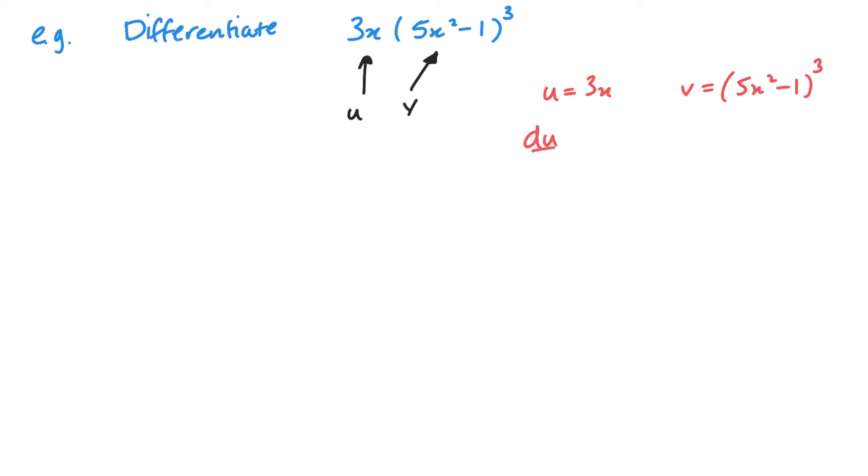And what I need to do now is differentiate both of these. So du by dx. So du by dx will be 3 in this case, and then dv by dx. So if you remember from last time, we multiply by the 3 to the power 2, same bracket, and multiply by the differential of that bracket. So we get 3, 5x squared minus 1 squared times 10x. So we've got 30x, 5x squared minus 1 squared.